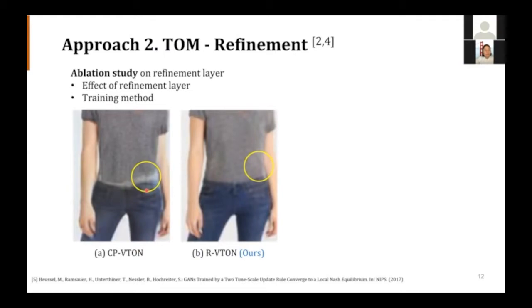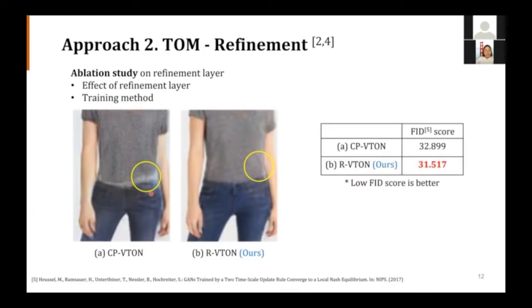We did an ablation study for finding optimal refinement layer. And by quantitative analysis using FID score, we decided to use dilated convolution networks separately. We will talk about this FID evaluation method in the later section. You could see from the table that FID score of our method is better than the original paper.